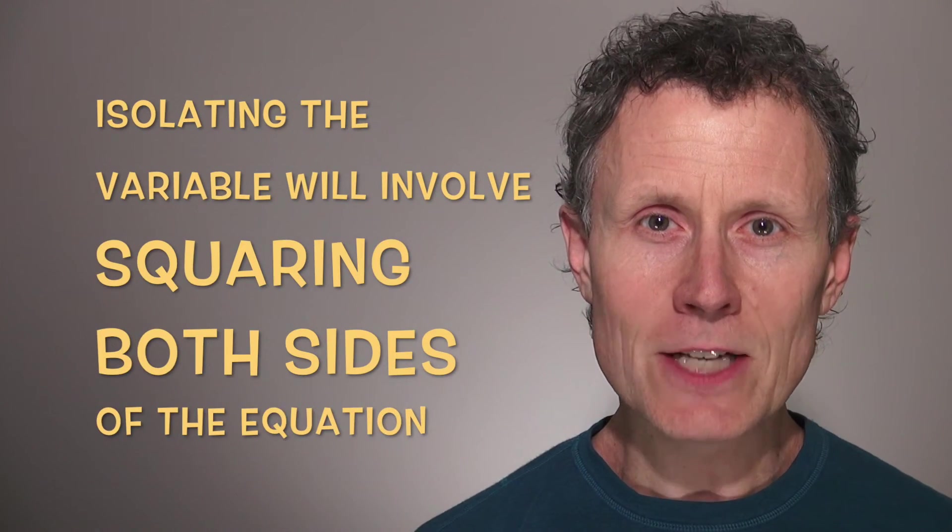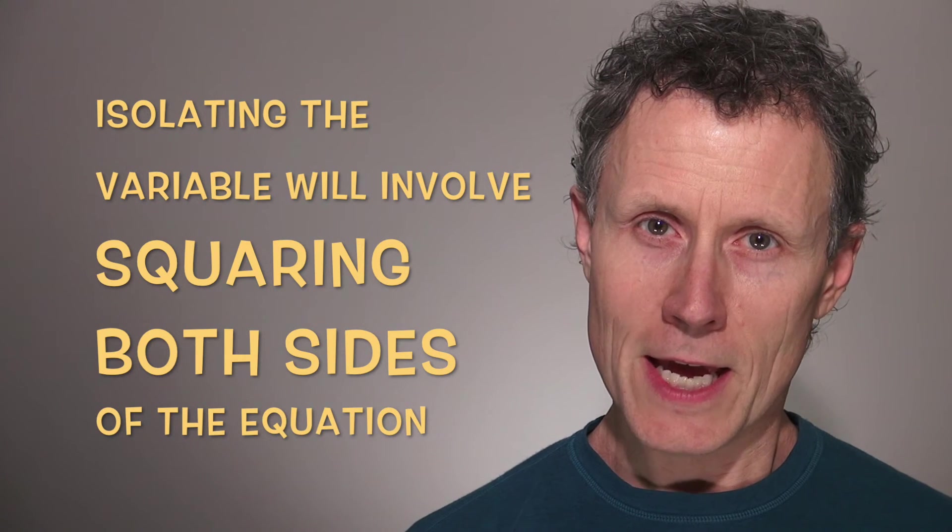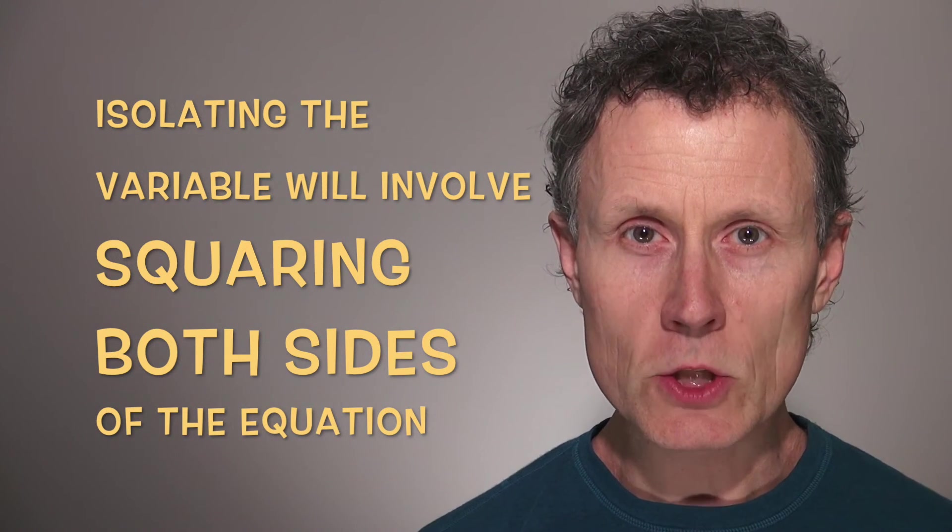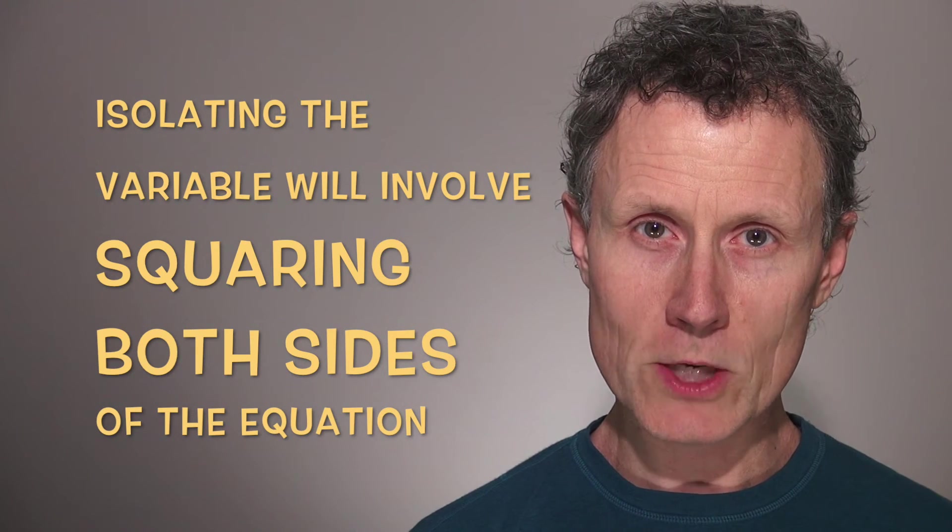To do that we're going to use the idea of isolating the variable. And the new part here is that at some point we're going to need to square both sides of the equation.